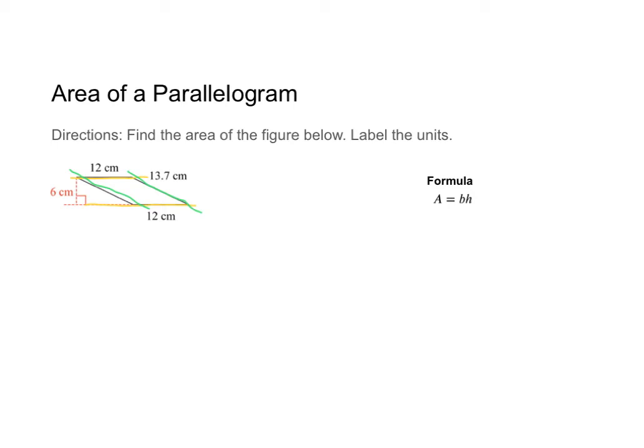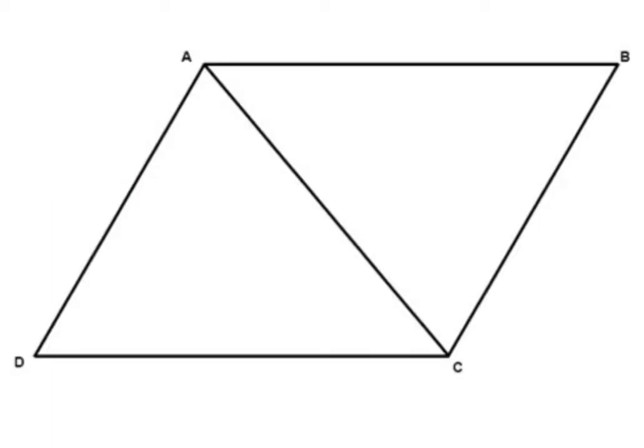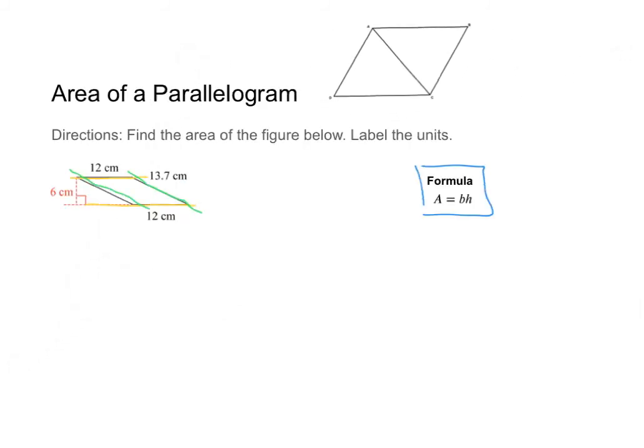Now, our formula is base times height. And it kind of looks like the formula for a triangle. And that's because if you were to take a parallelogram and kind of cut it in half, you would get a set of two triangles. So that's where our formula for triangles actually comes from. So I'm going to just keep that there. That was just a piece of extra information.